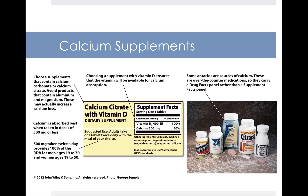Choose calcium supplements that contain calcium carbonate or calcium citrate. Avoid products that contain aluminum and magnesium, as they might actually reduce calcium loss. Calcium is best absorbed when taken in doses of 500 milligrams or less — two 500 milligram doses a day provides about 100% of the RDA for most groups. It's a good idea to also take a product with vitamin D to assure that calcium will be available for absorption. Antacids can also be a source of calcium; these are over-the-counter medications and carry a drug facts panel rather than a supplement facts panel.